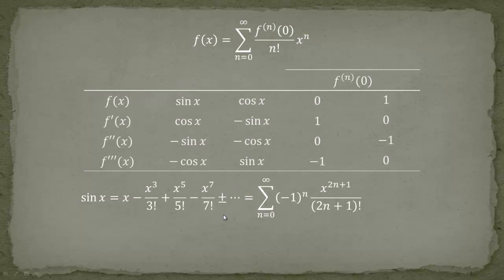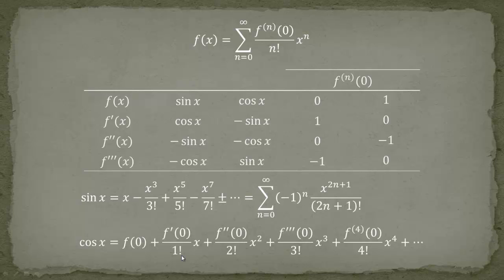The next term would be x to the 9 over 9 factorial, then minus x to the 11 over 11 factorial, and so forth. To write it in shorthand, we use sum notation with the alternating minus sign depending on n. If n equals 0, you get the first term with a positive sign; if n equals 2, you get a negative sign, and so forth. Doing the same for the cosine shows it is similar, but now only even terms exist — all odd powers of x vanish — and again we have an alternating sum.